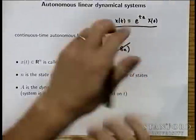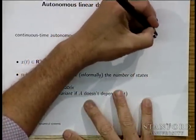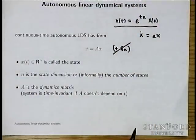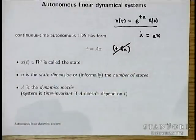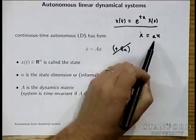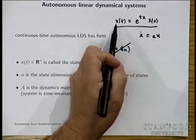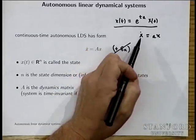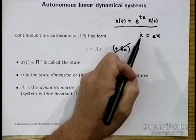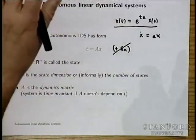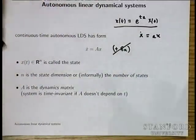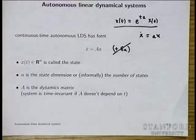The qualitative behaviors of the scalar case are boring. If a is zero, x is constant. If a is positive, you get a growing exponential. If a is negative, you get a shrinking exponential. That's three qualitative types of behavior. When we overload this idea to vectors, the behavior becomes much richer.